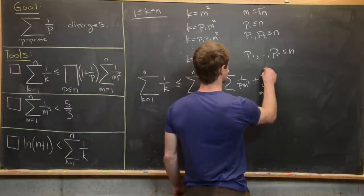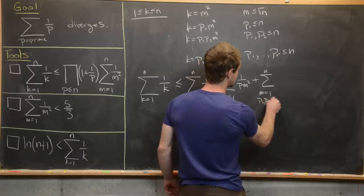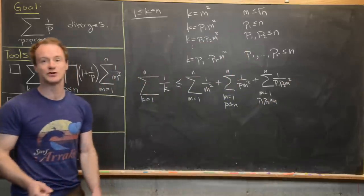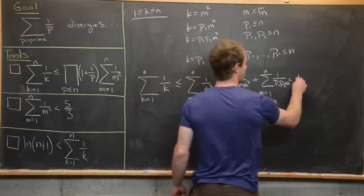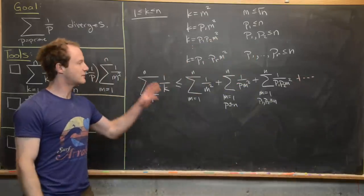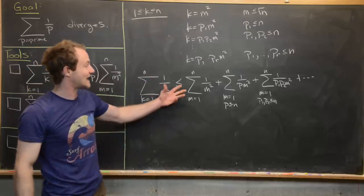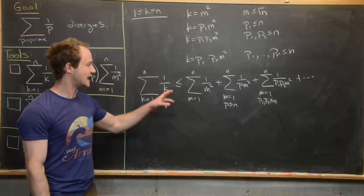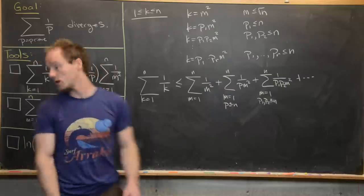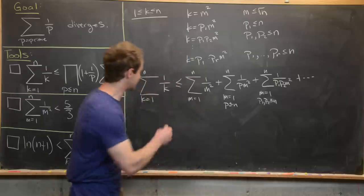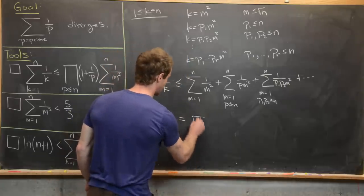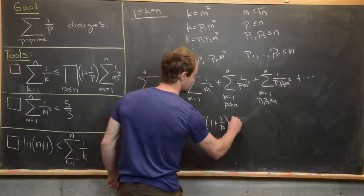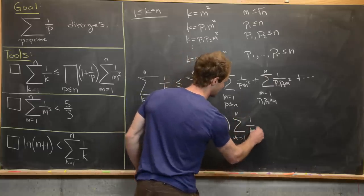Continuing, we add the sum m from 1 to n over all pairs of distinct primes p₁, p₂ ≤ n of 1/(p₁·p₂·m²), and so on. Since there are only finitely many primes less than or equal to n, the right-hand side factors as the product over all primes p ≤ n of (1 + 1/p), times the sum m from 1 to n of 1/m².